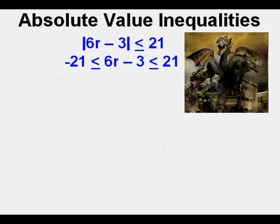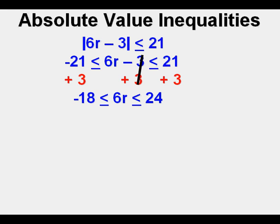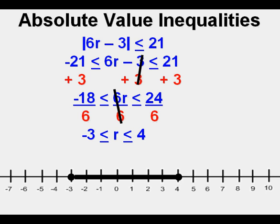This is less than, so less is NEST. We bring it down and have our three-headed monster again. We get rid of the negative 3 by adding 3 to each expression and bring the rest down. Then we divide by 6, cancel the 6s, and bring down everything else. Here it is graphed on a number line: negative 3 is less than or equal to r, which is less than or equal to 4.